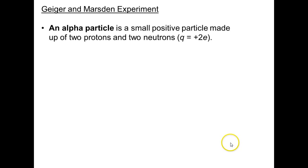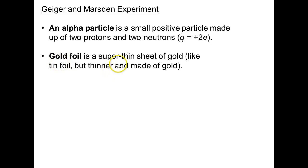So what's the experiment, this famous experiment? First let me introduce an alpha particle, which is a small positive particle made up of two protons and two neutrons. If there's two protons with no electrons, then the net charge of the particle is plus 2e, where e is the elementary charge. Gold foil is like tinfoil, but made of gold. Gold foil is super thin, a very thin sheet of gold.